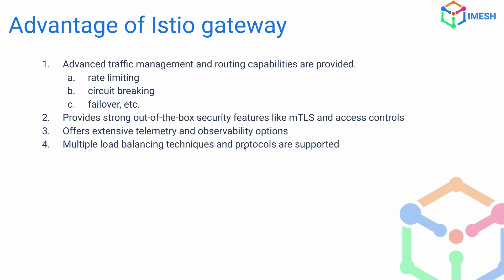That is why there are quite a few advantages to using Istio Gateway. The first is its advanced traffic management and routing capabilities. Rate limiting, circuit breaking, and failover are basic things for an API gateway, but they are very easy to set up in Istio — you just write Virtual Services and Destination Rules and you're done. It also provides strong out-of-the-box security: mTLS, which was painful in Kubernetes, comes out of the box here, along with access control and many other features. It also offers an extensive range of telemetry and observability options.